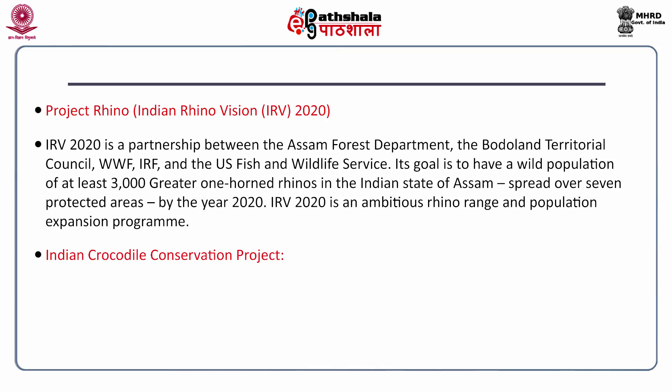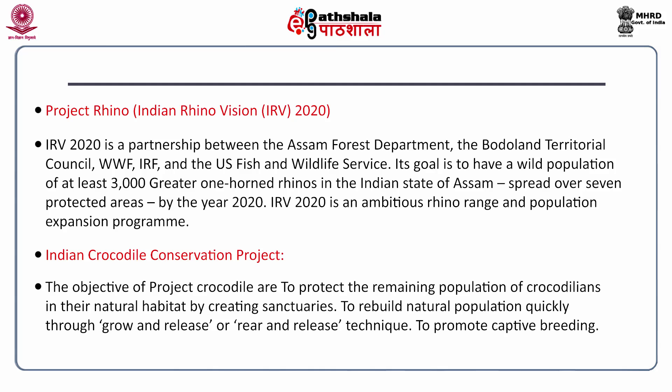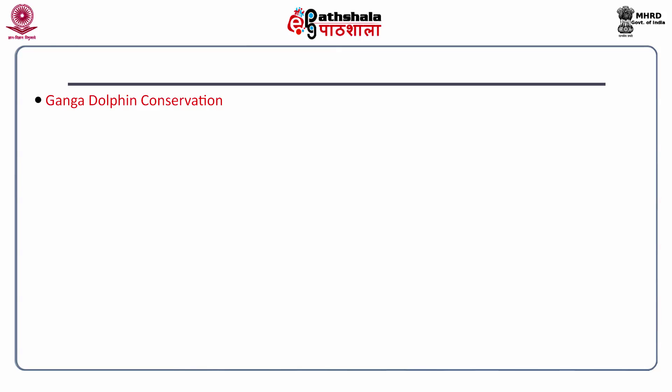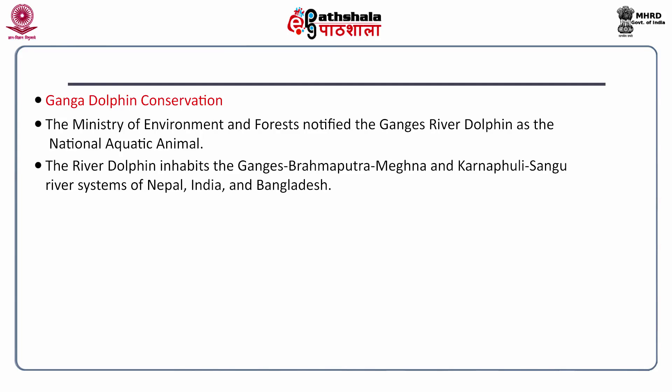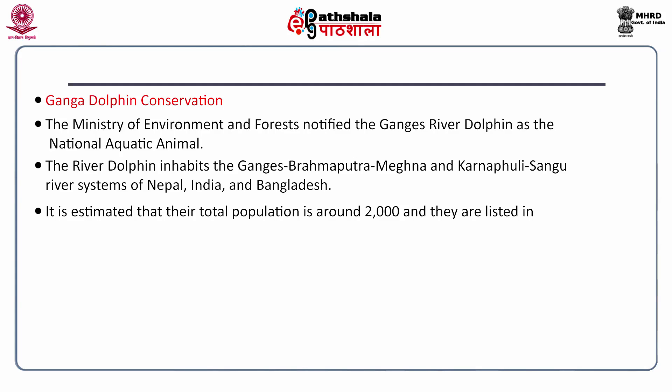The Indian Crocodile Conservation Project aims to protect the remaining population of crocodiles in their natural habitat by creating sanctuaries, and to rebuild natural populations quickly through grow-and-release or rear-and-release techniques, as well as promoting captive breeding. The Ganga Dolphin Conservation Program is for the conservation of the Ganga Dolphin, which the Ministry of Environment and Forests has notified as the National Aquatic Animal. The Ganga Dolphin inhabits the Ganges, Brahmaputra, Meghna and Karnafuli-Sangu river systems of Nepal, India and Bangladesh. Their total population is estimated at around 2,000 and they are listed in Schedule 1 of the Wildlife Protection Act, 1972.